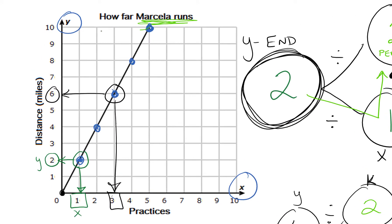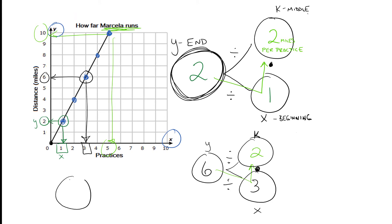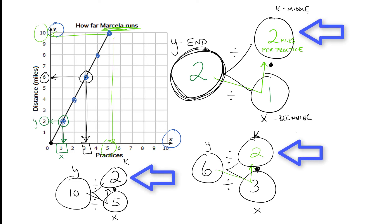You can do it with any of them. You can do it all the way up here - 10 and 5. 10 is the y value and 5 is the x value. I know that 10 divided by 5 is going to give me 2.